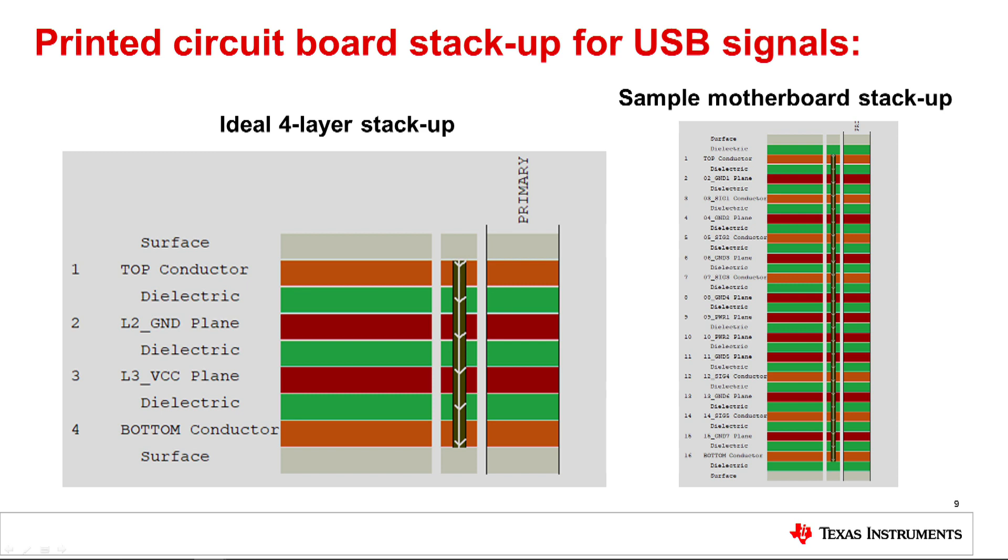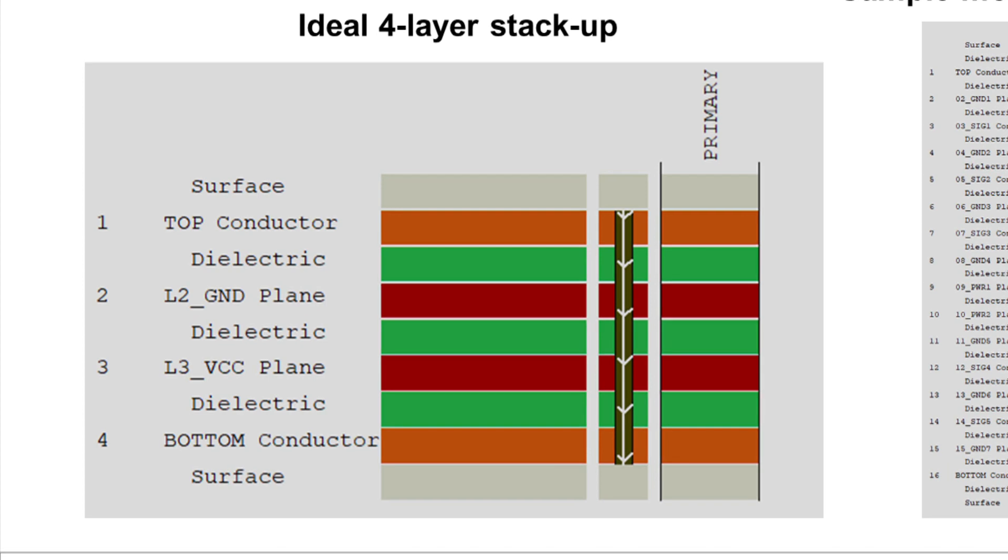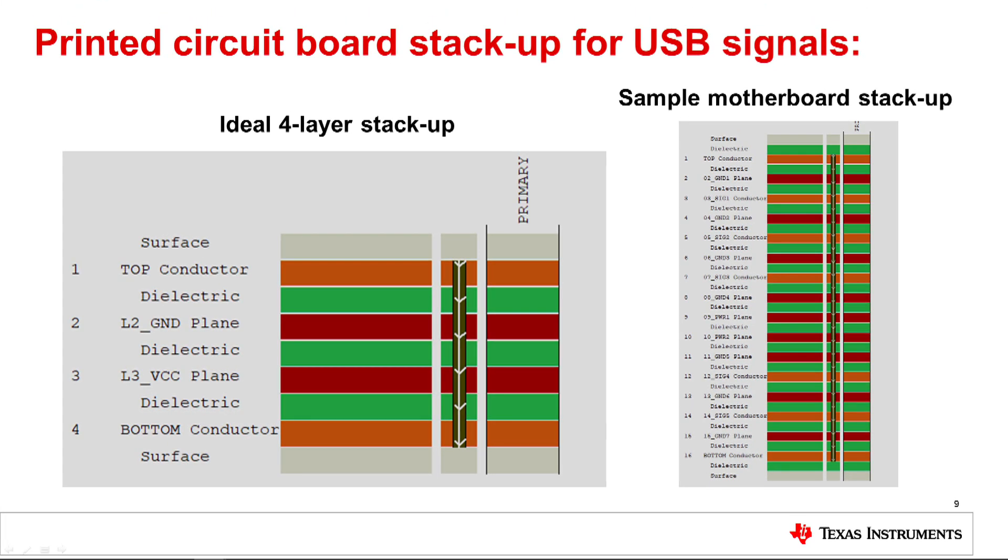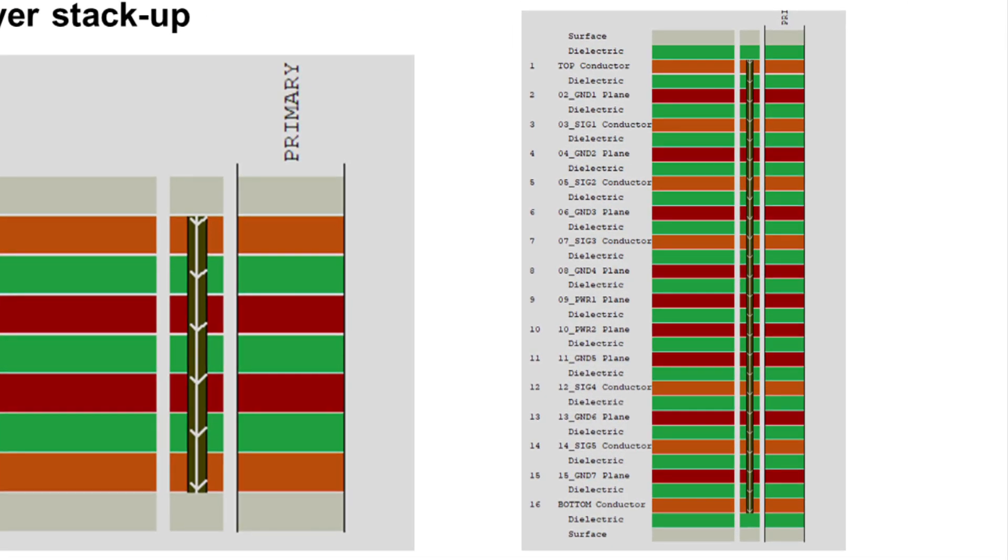PCB stack up also has an impact on USB signal quality. Because of the high frequencies associated with USB, a PCB stack up with at least four layers is recommended to provide a solid ground plane under the differential pairs. An ideal stack up typically used on EVMs is shown on the left, with two signal layers separated by a ground layer and a power layer. Routing priority should be given to the high speed signal traces, placing them on the top layer above the solid ground plane or when necessary on the bottom layer, taking care not to route at right angles over power plane splits. If a circuit is complex and signals must be routed on inner layers as strip line traces, care should be taken to separate signal layers with ground layers or with power layers. A sample motherboard stack up is shown on the right with all signal layers isolated by ground layers.